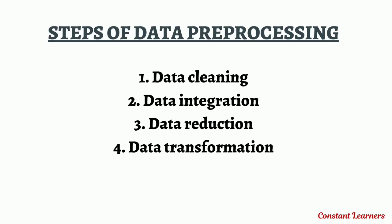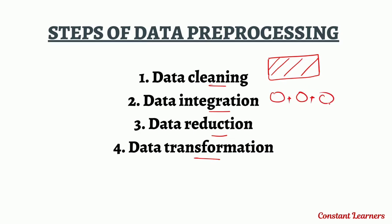There are four steps of data pre-processing: cleaning the data, integration, reduction, and transformation. When we collect raw data, it may have false or incomplete values, so data cleaning is done to clean this inaccurate data. After cleaning, since data is collected from multiple sources, we need to integrate it and bring it together. When integrated, it is in excessively large volumes, so a data reduction method is used to reduce its size — because data mining performed on large data sets is not as efficient as it is on reduced data sets.